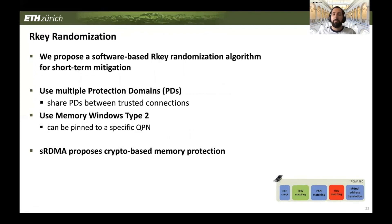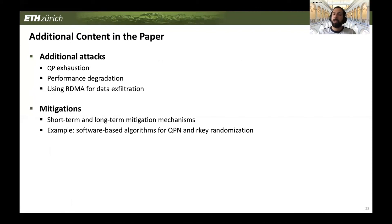We also have suggestions for R-key generation with an algorithm detailed in the paper. We suggest using existing RDMA security mechanisms such as multiple protection domains, only sharing a protection domain between trusted connections. There is also a mechanism called Memory Windows Type 2, which allows pinning a memory window to a specific Queue Pair. Additionally, SRDMA proposes crypto-based memory protection. The paper also covers Queue Pair extraction attacks, performance degradation, and RDMA-based data exfiltration, with both short-term and long-term mitigation mechanisms.